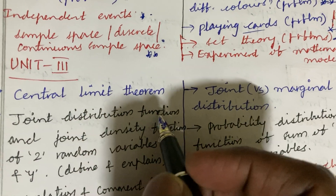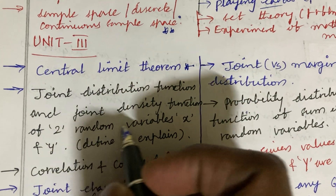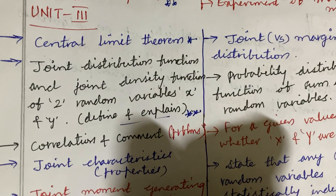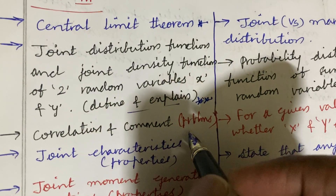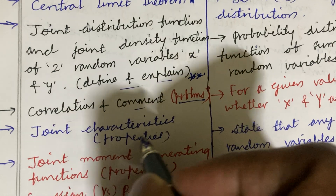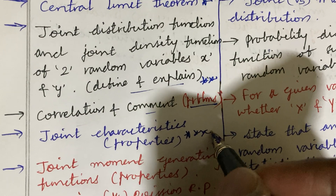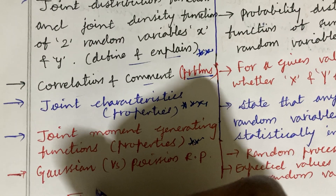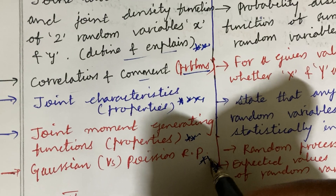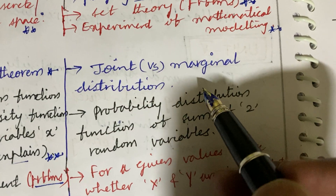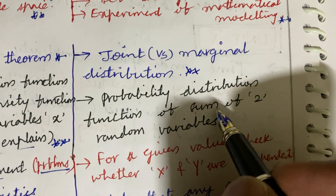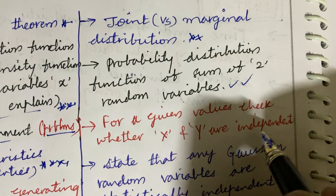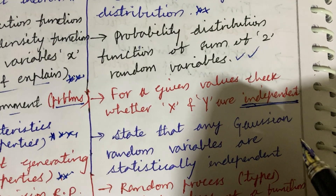Later I have come up with Unit 3. Define the central limit theorem and explain it. Joint distribution function and joint density function of two random variables X and Y — define and explain — such questions are damn sure in the question paper. Define correlation and covariance; if they ask the definition it will be in short. Joint characteristic function and its properties is a short question. Joint moment generating functions along with properties may be a five-mark question. Poisson random variable is also a sure-shot question. Joint versus marginal distribution and their differences, and the probability distribution function of the sum of two random variables, are top questions. For given values, check whether X and Y are independent — such questions are damn sure.